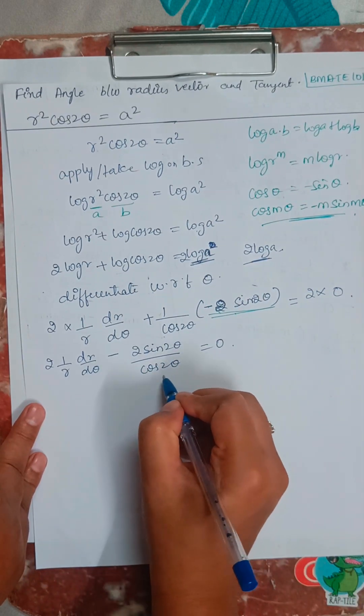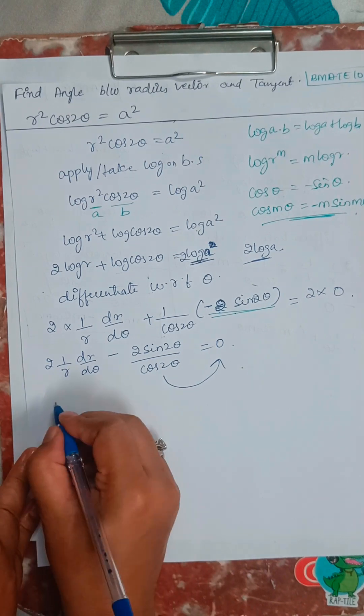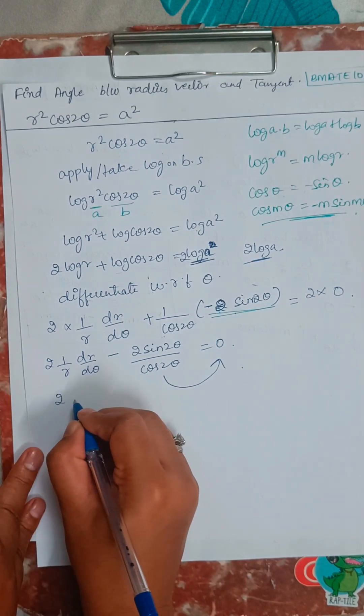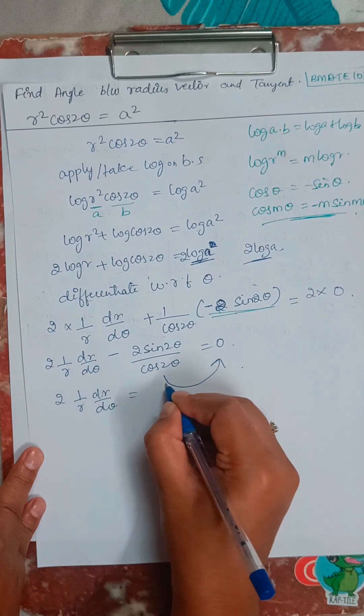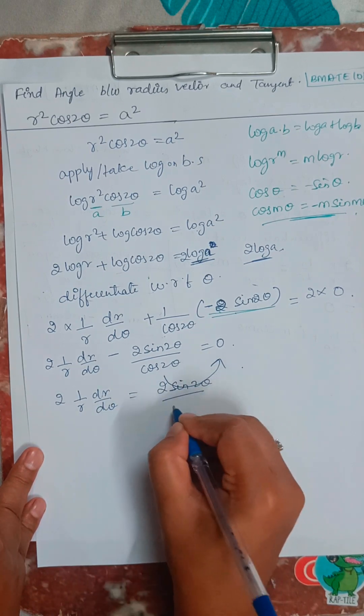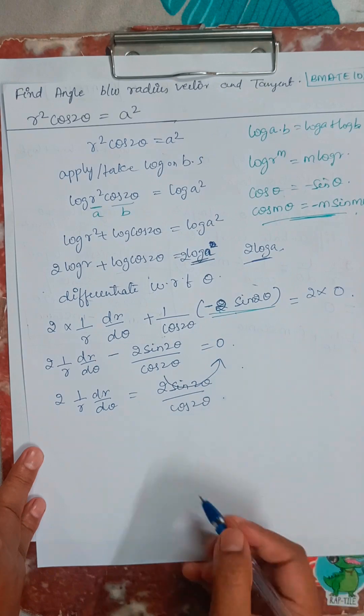Now I will send this term to the other side of the equation. 2 times 1 by r, dr by d theta equals 2 sin 2 theta divided by cos 2 theta.